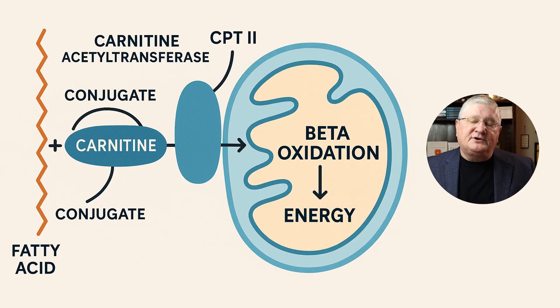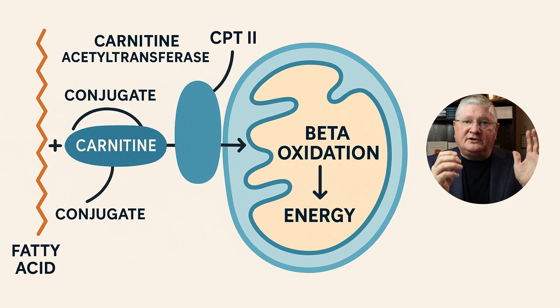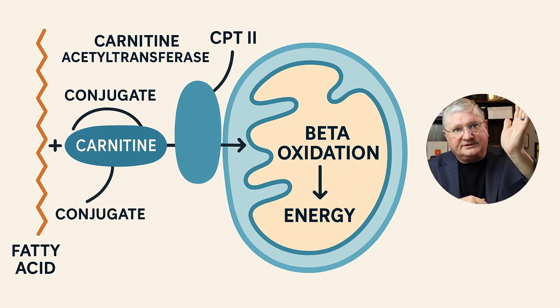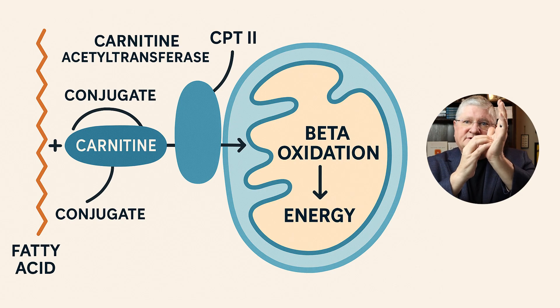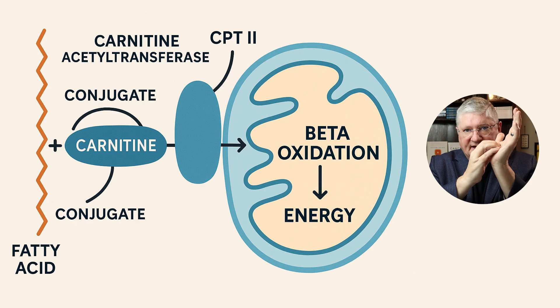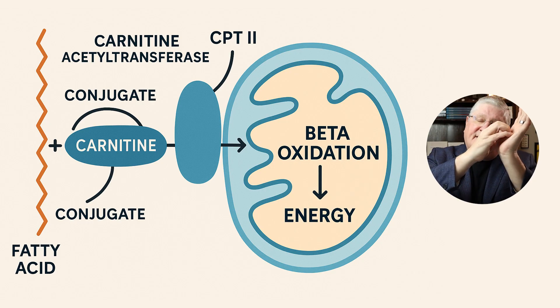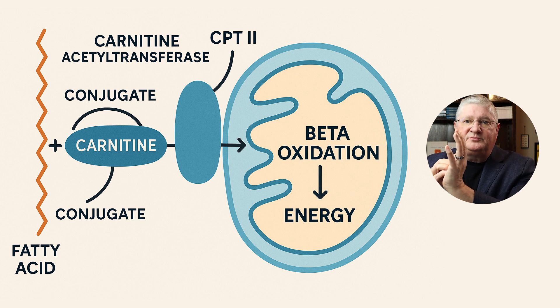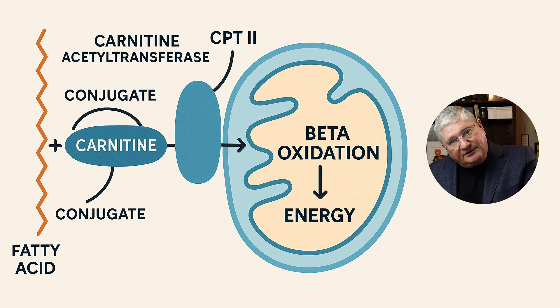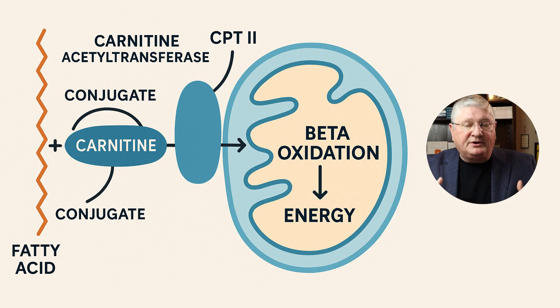Amino acids are often used as what's called a conjugate. Carnitine comes alongside the fatty acid and adds to it — conjugates to it — making it a more cumbersome molecule. That happens in the carnitine acyltransferase step, which then makes that molecule fall over to the CPT2 transporter. The fat gets stuck and can't go back outside, so it gets shoved into the mitochondria to be burned up in beta oxidation to make energy.